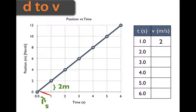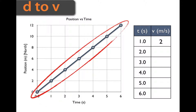Now, an interesting thing with a graph like this — notice that it's as straight as a ruler. Anytime you have a position-time graph, or a portion of that graph, that's completely straight, it means that the velocity is going to be constant throughout that entire period.